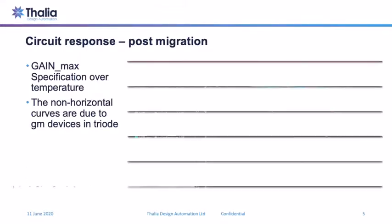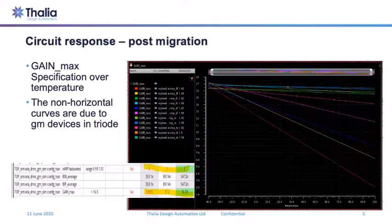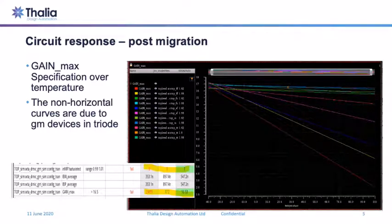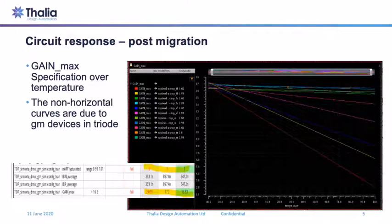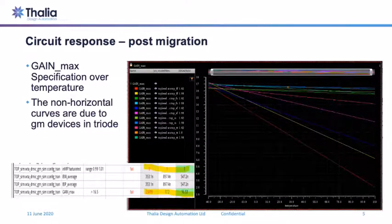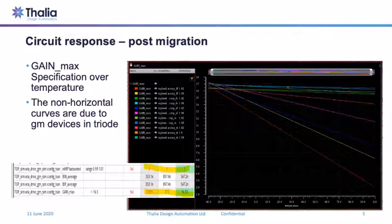Part of the effort of migrating IP from one technology to another is qualifying the IP in the target technology. What you see here is one of the key specifications — gain max of the amplifiers. The picture on the right shows that gain max slopes downward over temperature, and the box on the bottom left shows the gain max specification ranges from 2 all the way to 16 over corners. This means the circuit has not met requirements in the target technology — if the individual amplifiers don't meet the requirement, the circuit is not functional and this needs to be addressed.